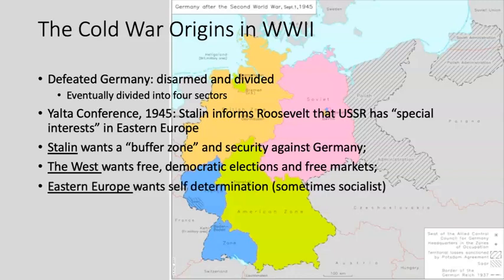Caught in the literal middle are the actual countries themselves. They also want self-determination and democratic elections — but that doesn't always mean they'll vote for someone aligned with England or the United States. Many suffered under fascism and fear anything right-wing or nationalist. A lot want to be socialist but independent countries, not puppets of the West or the East. Turns out they don't get that.